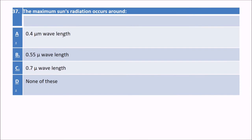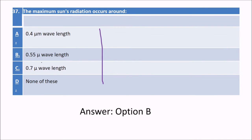Maximum sun's radiation occurs around — the answer is 0.55 micrometers wavelength.